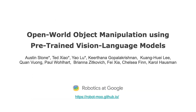In this video, we introduced Manipulation of Open-World Objects, a method that combines the generalization capabilities of object-centric VLMs like OWL-VIT with the robustness of multi-task robotic manipulation policies like RT1. We believe that MOO is a promising step towards a general robotic system that can do many tasks with many objects.